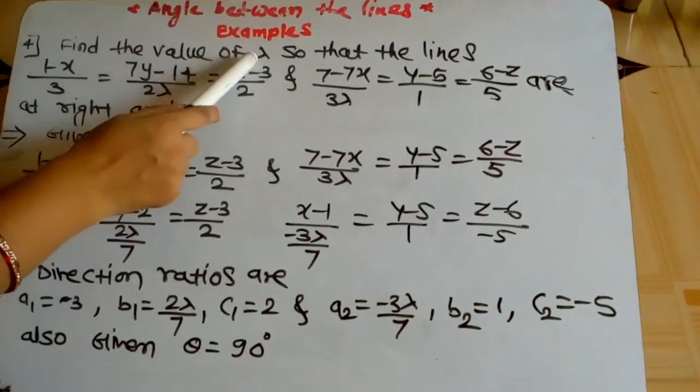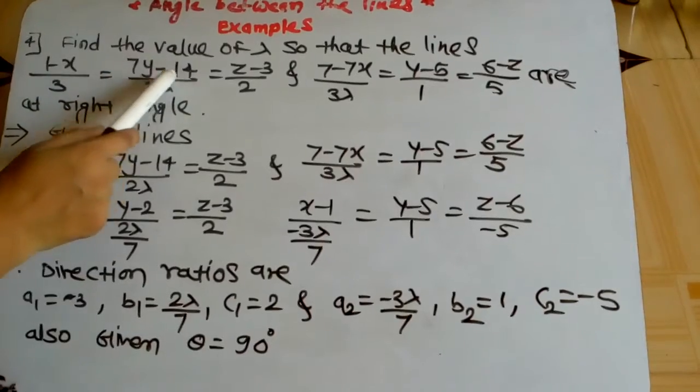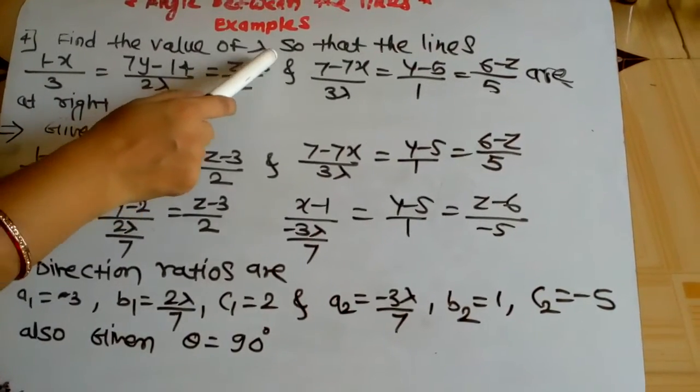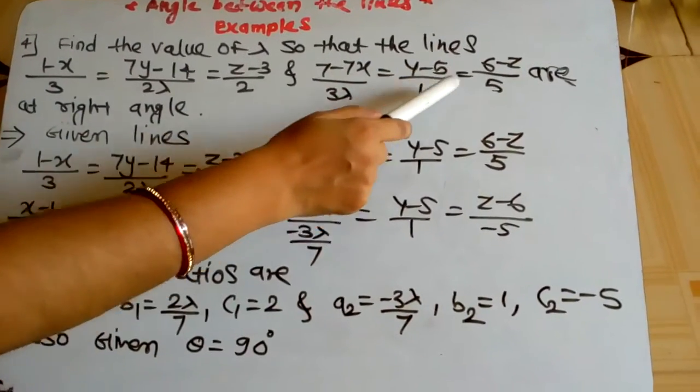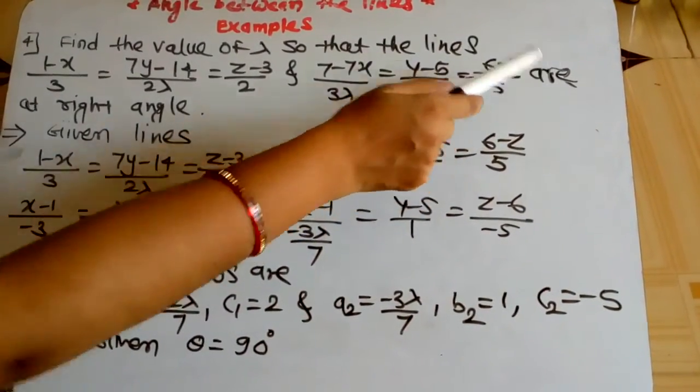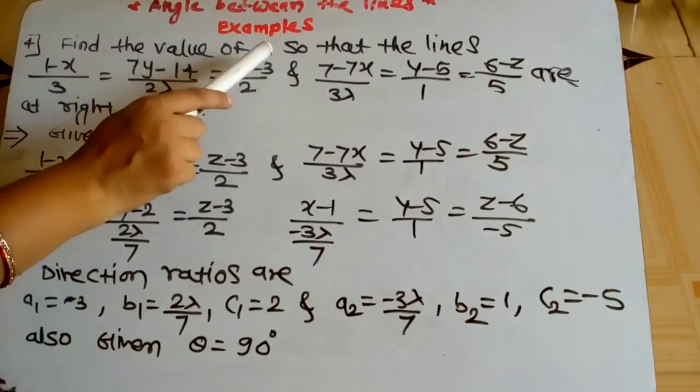Next example: Find the value of lambda so that the lines (1-x)/3 = (7y-14)/(2λ) = (z-3)/2 and (7-7x)/(3λ) = (y-5)/1 = (6-z)/5 are at right angle. Here the angle is given, and we have to find lambda.